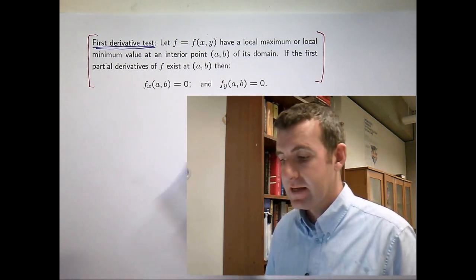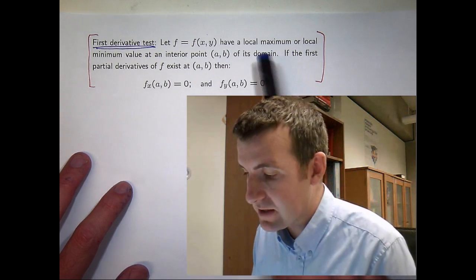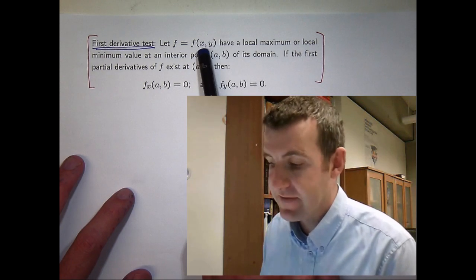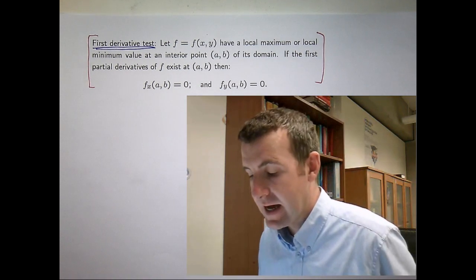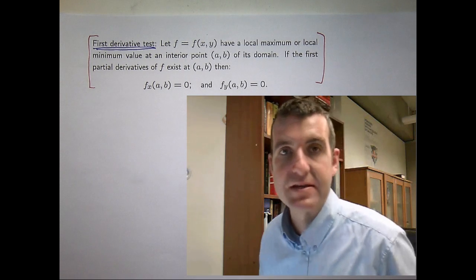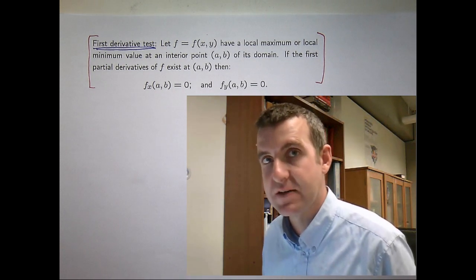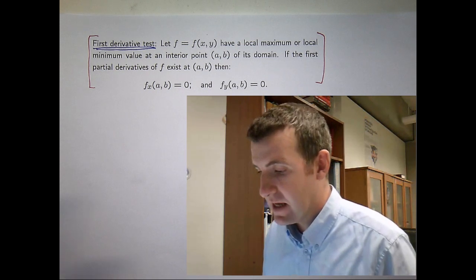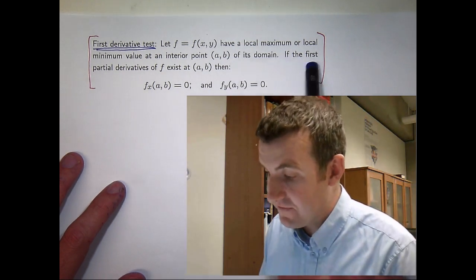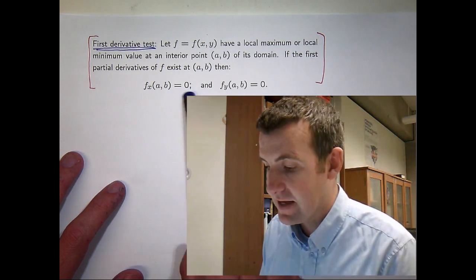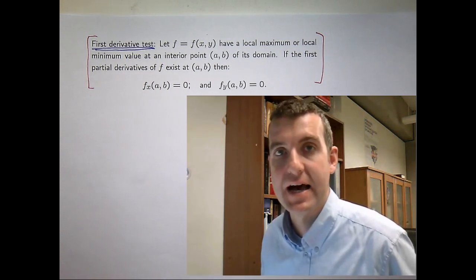Now we speak of an interior point of its domain this means a point that's not on the boundary. Now say if f is a polynomial then you don't need to worry about this. It's just so the partial derivatives are all well defined. If the first order partial derivatives of f at that point exist then these two partial derivatives are zero.